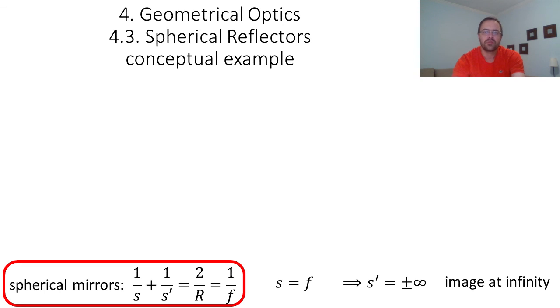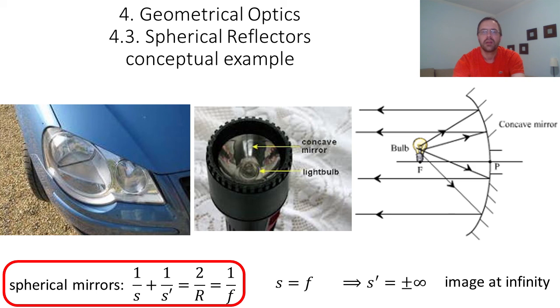Now, you should also know that the reverse is also true. If the object is at the focal point and s = f, then the image will be at infinity. This is used, for example, for a torchlight or the headlights of your car. The light bulb is located at the focal point of a concave mirror, and the image of this light bulb is then located at infinity, so the rays of light will emerge parallel to each other. This is to have light as far away as possible.